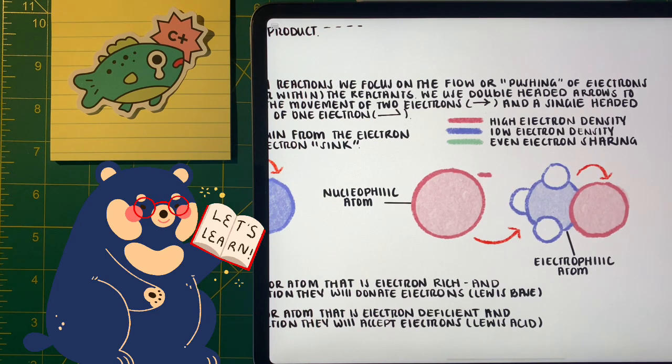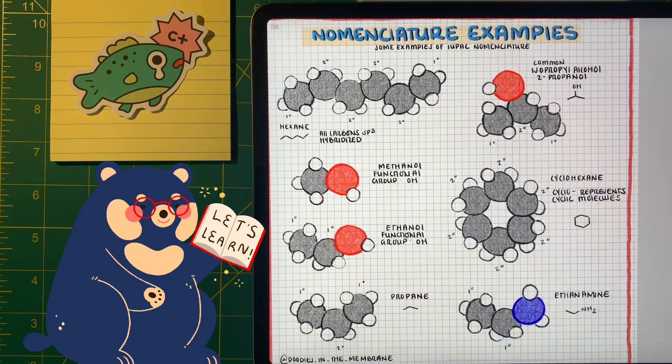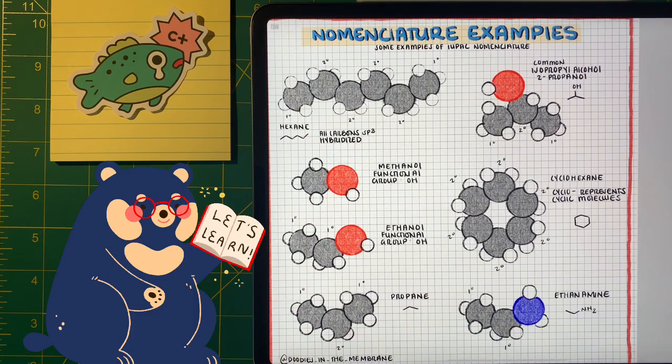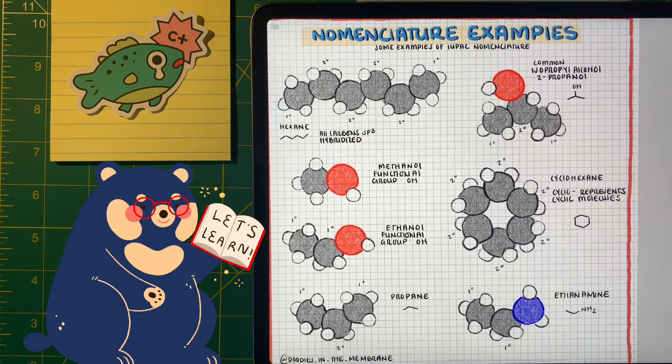Electron pushing, or electron arrows, has helped us represent the direction of electrons in an organic chemistry reaction, and they always start from an area that's electron rich and end at the electron sink, or an area where it's electron deficient. In organic chemistry reactions, we talk about an atom that is electron rich as being nucleophilic, and an atom that is electron deficient as being electrophilic. By looking at different functional groups, we can start assuming what areas of a molecule will be electrophilic or nucleophilic, depending on how the electron density is skewed towards that atom.